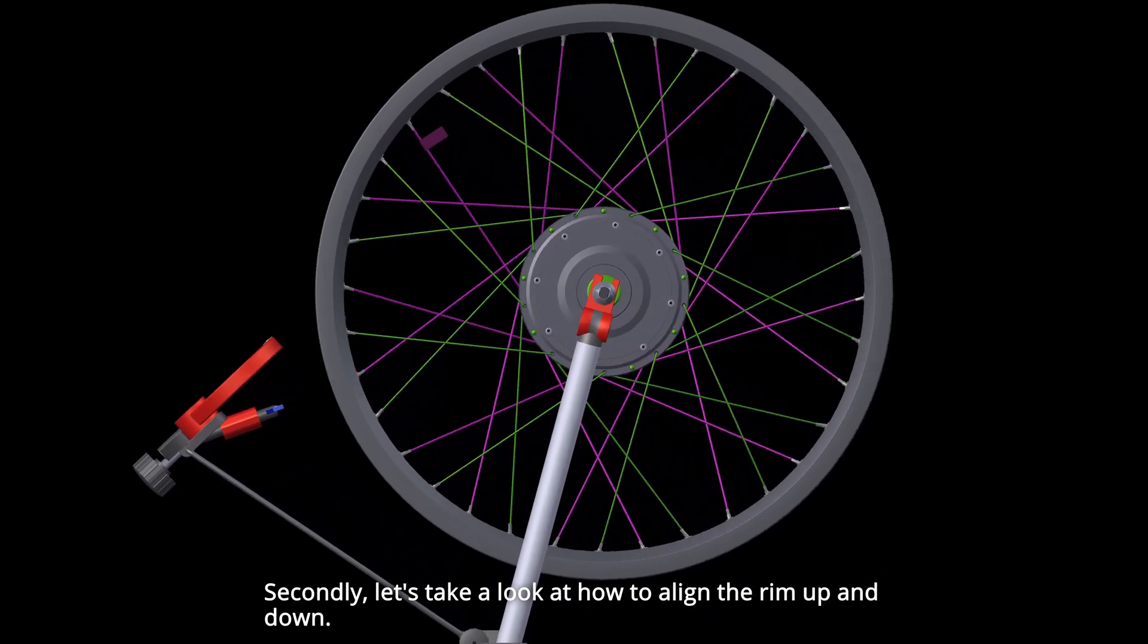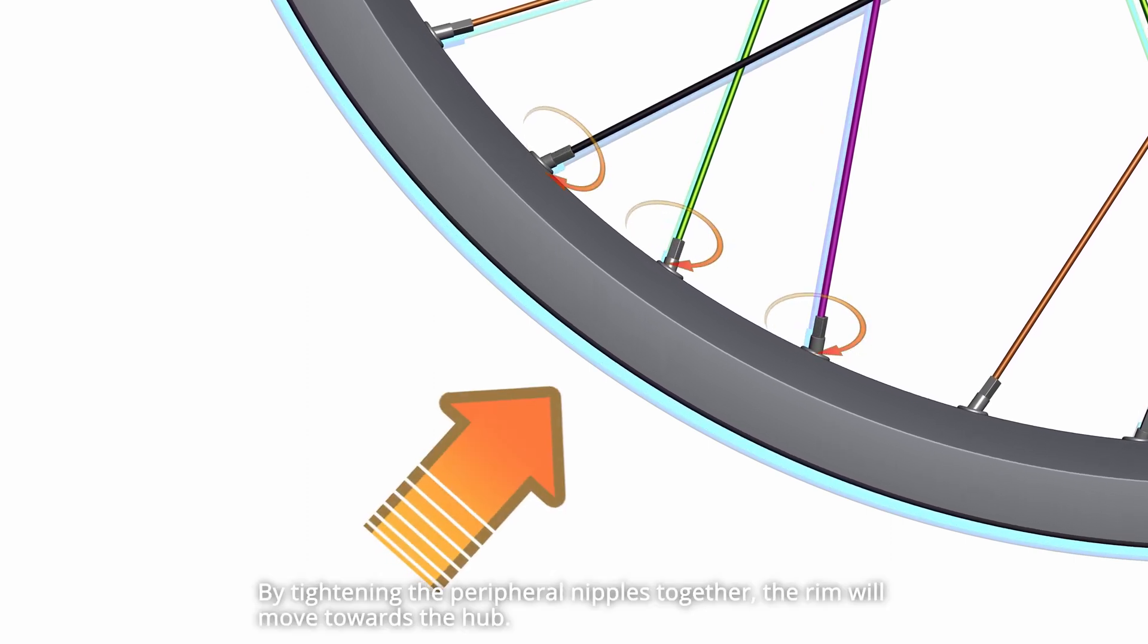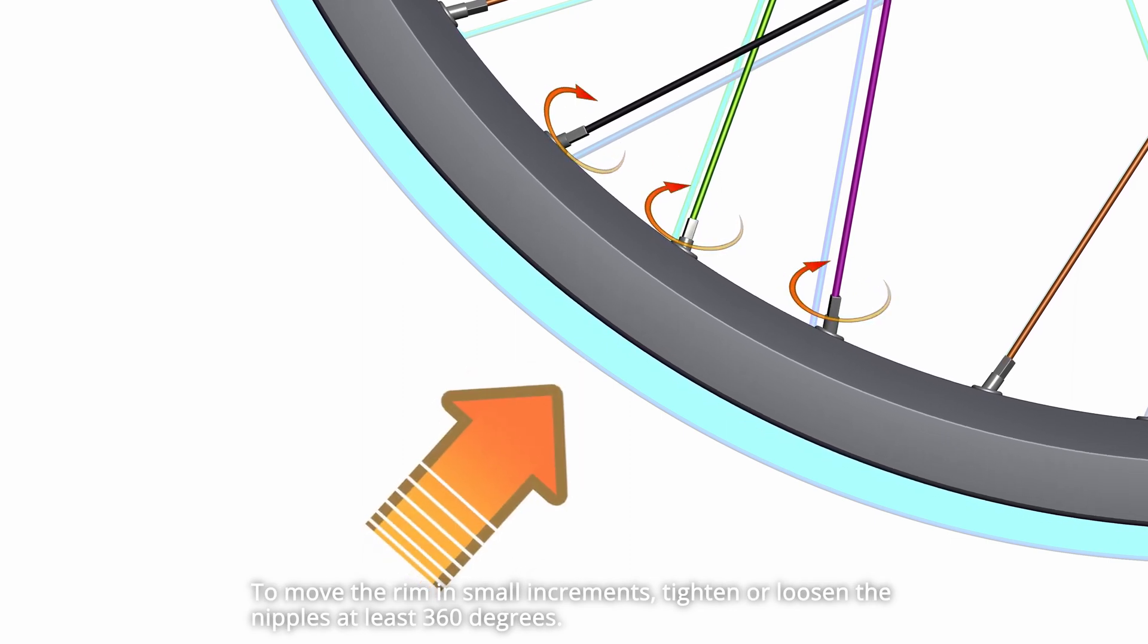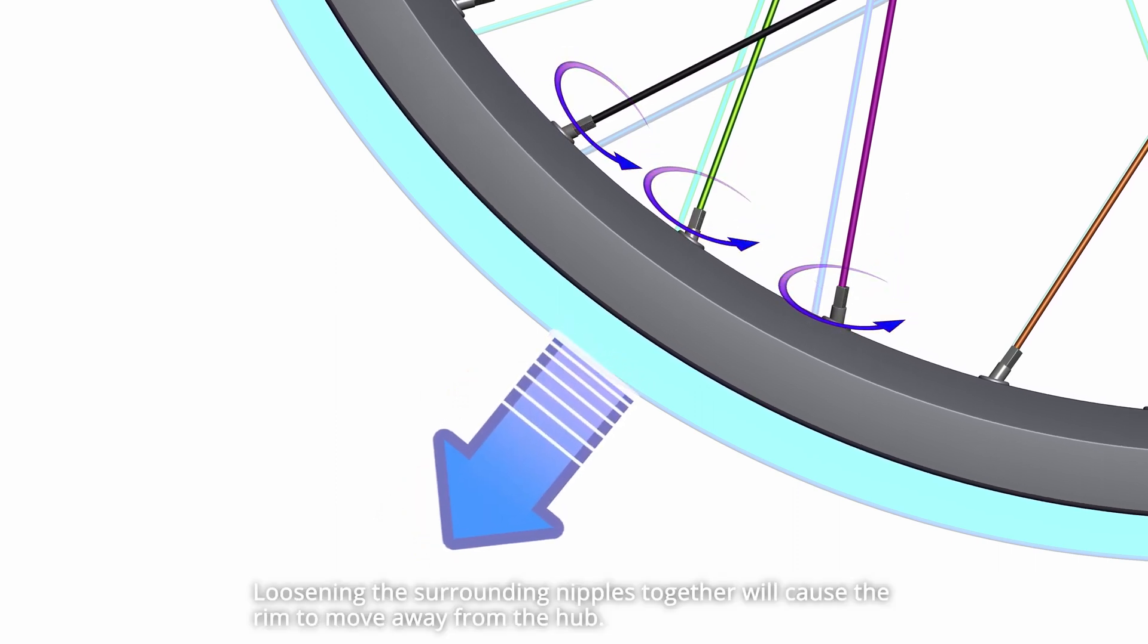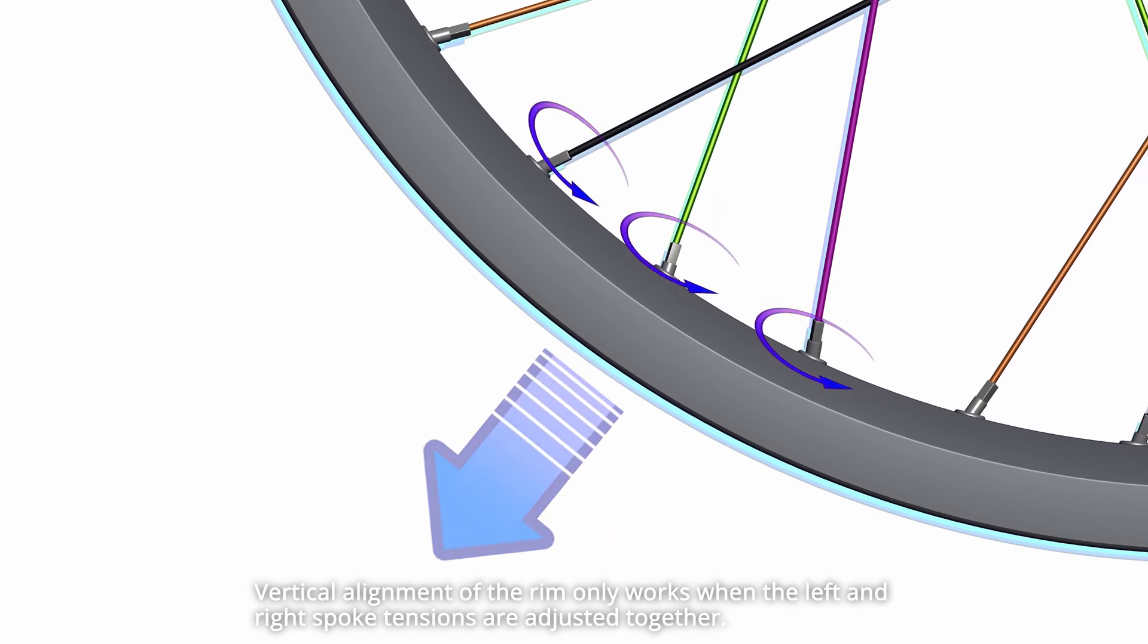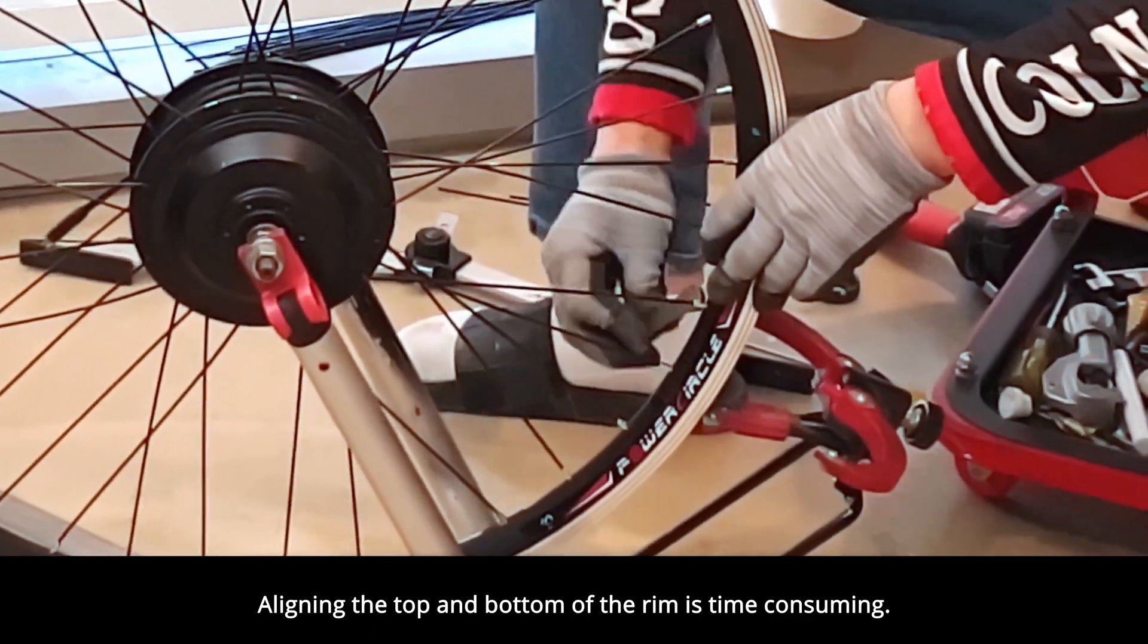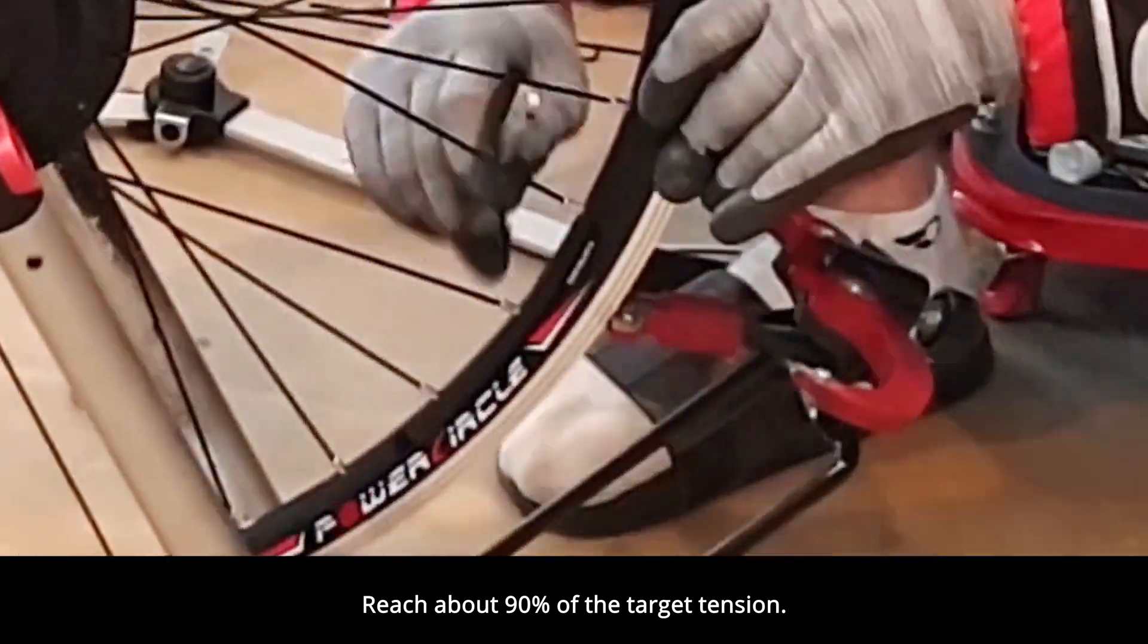Secondly, let's take a look at how to align the rim up and down. By tightening the peripheral nipples together, the rim will move towards the hub. To move the rim in small increments, tighten or loosen the nipples at least 360 degrees. Loosening the surrounding nipples together will cause the rim to move away from the hub. Vertical alignment of the rim only works when the left and right spoke tensions are adjusted together. Aligning the top and bottom of the rim is time-consuming. Reach about 90% of the target tension.